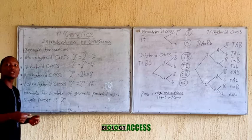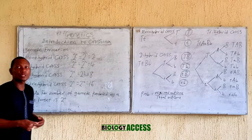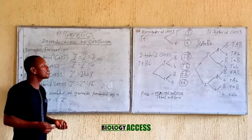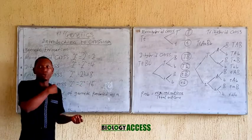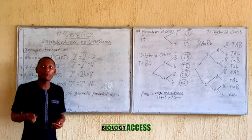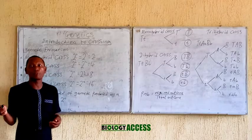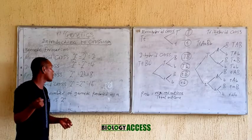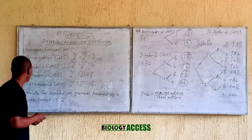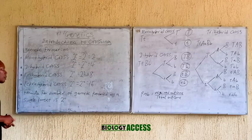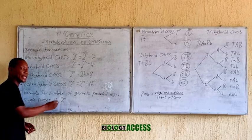First, you have to know the number of gametes produced in a monohybrid cross. It is not just choosing arbitrary gametes — 2 or 4. There is a formula. You have to know the number produced in dihybrid, trihybrid, and all that. The formula for the number of gametes produced by a single parent is 2 raised to the power n.